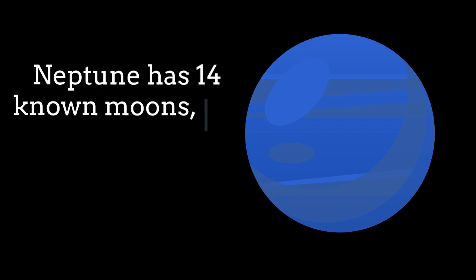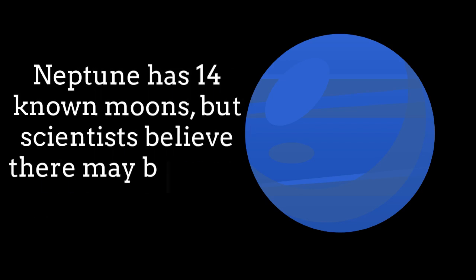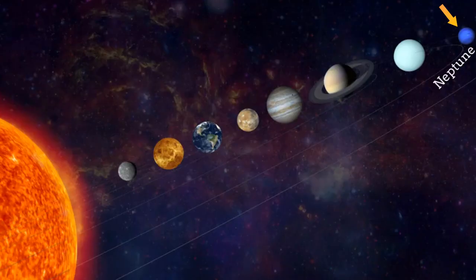Neptune has 14 known moons, but scientists believe there may be more moons. So here is the Neptune, the last planet and farthest from the Sun.